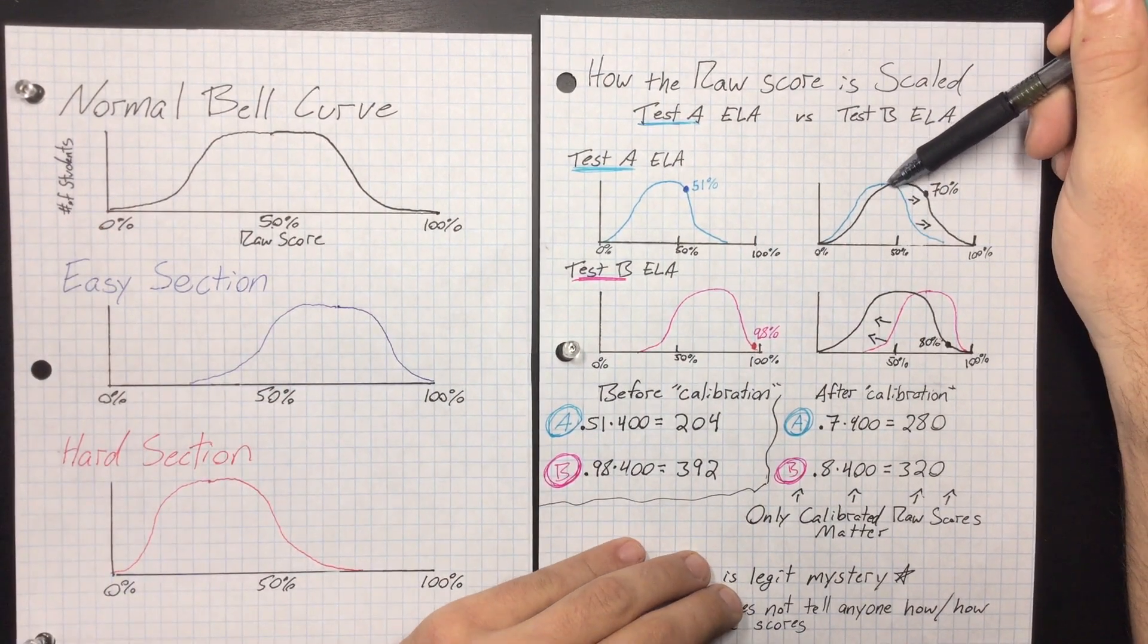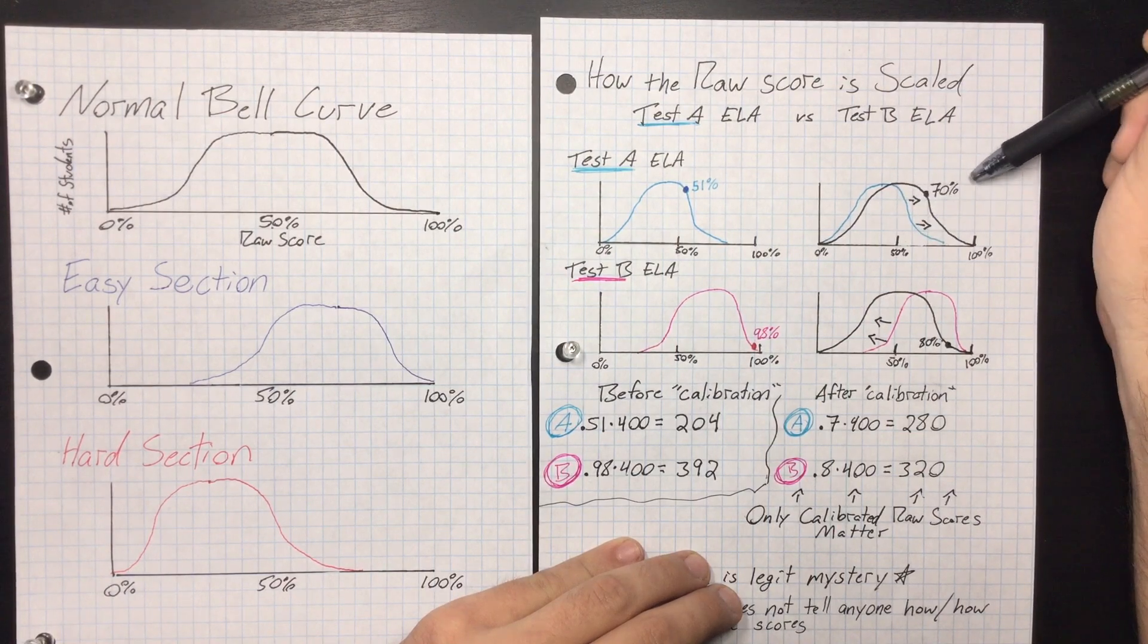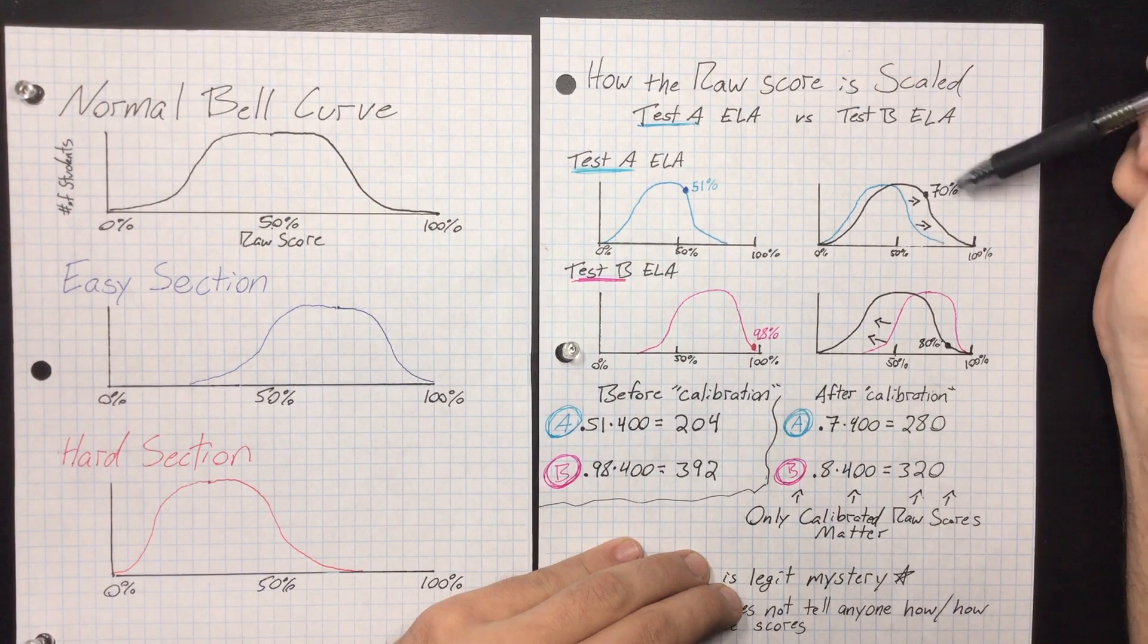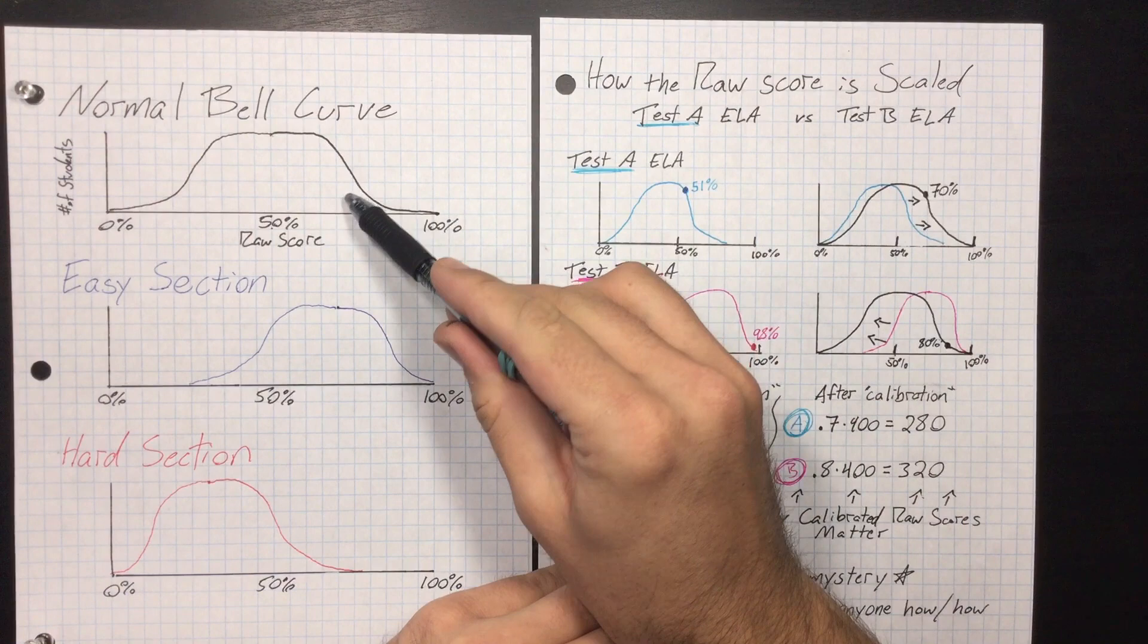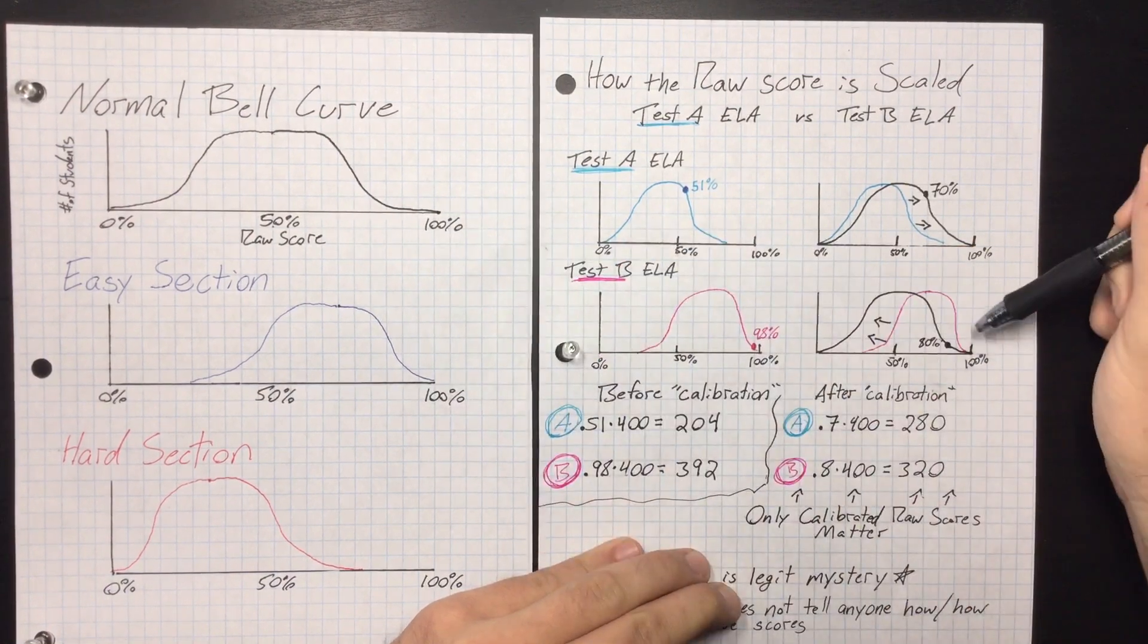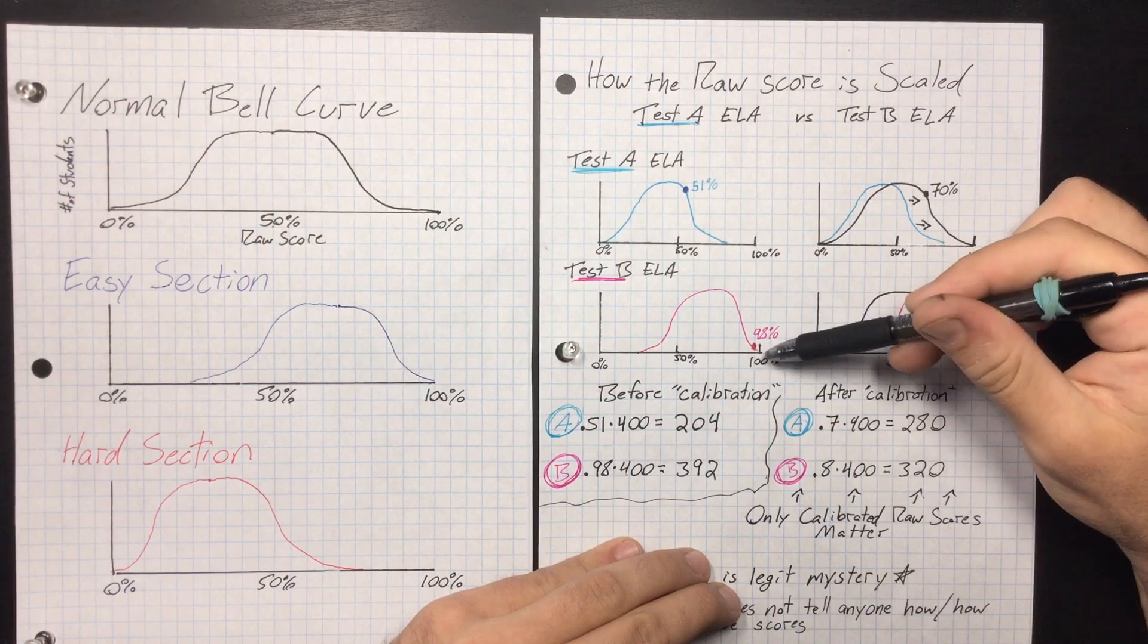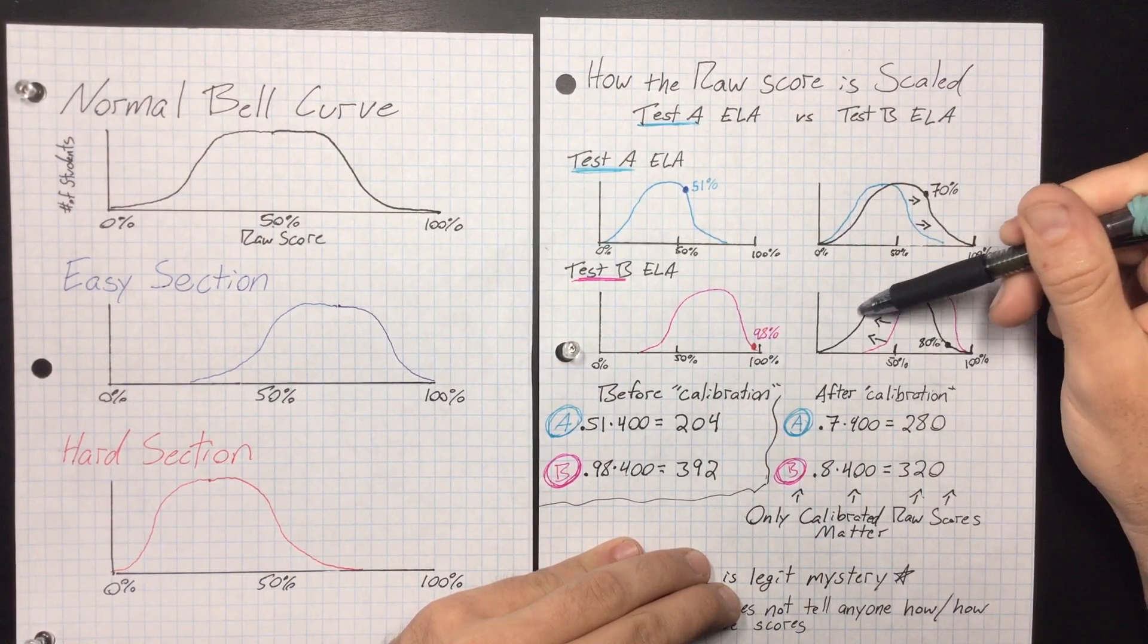But what they do is they artificially push up, pump up the scores of a hard test. So your 51% is now a 70%. And now that they pumped up the scores, we have a nice normal bell curve. They do the same if you get a really easy test - they push all the scores down. So your 98% is now just an 80%. But it's a nice normal bell curve.